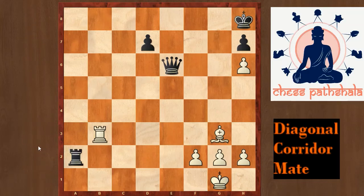Hello friends. In this video we will learn about diagonal corridor mate. We already know the concept of corridor mate — the king is trapped in a corridor which can be a rank, a file, or a diagonal. We have already seen examples of back rank checkmate as well as corridor mate in files. In this video we will learn about corridor mate on the diagonal.